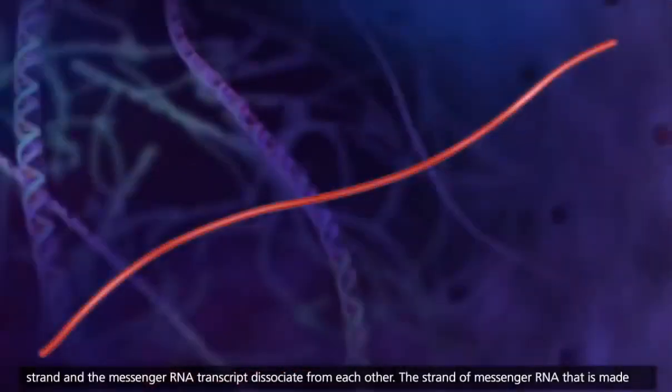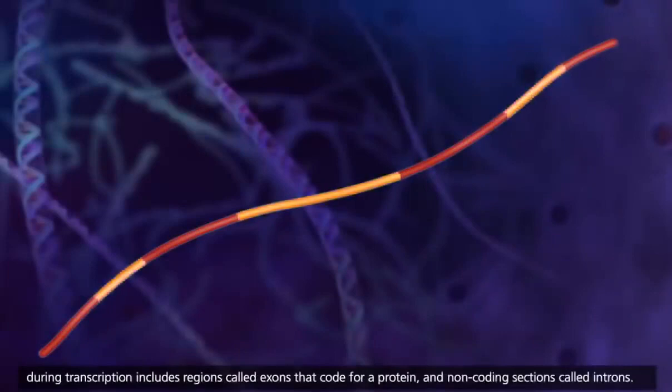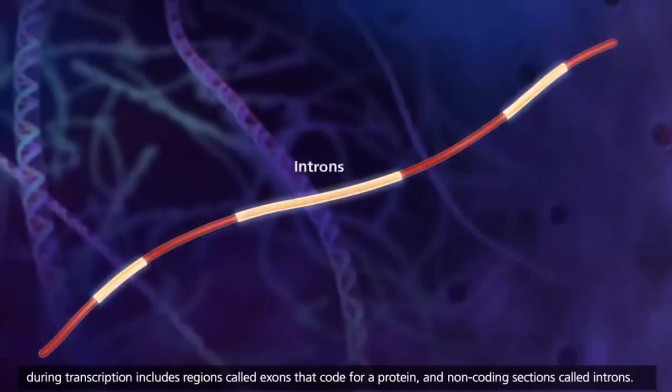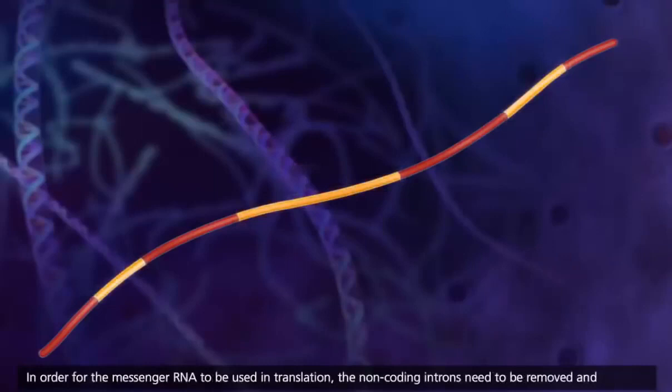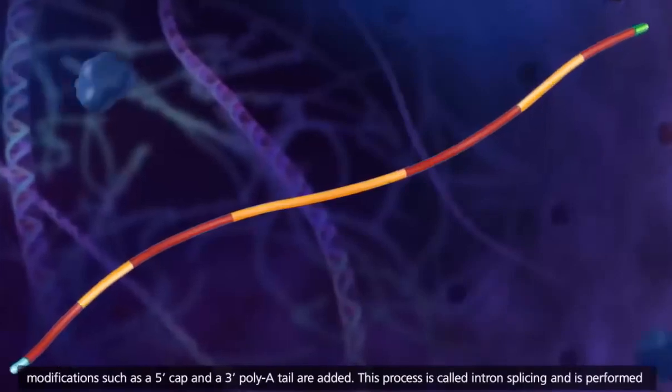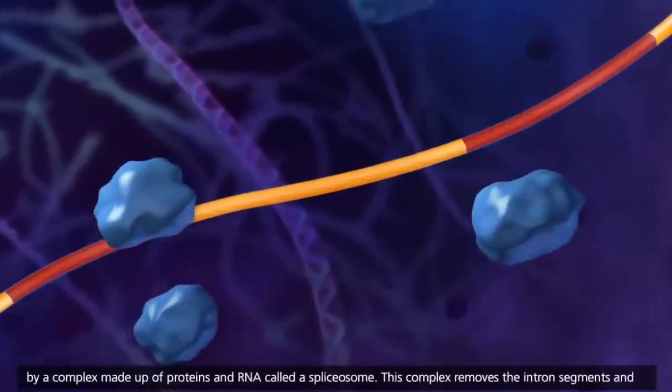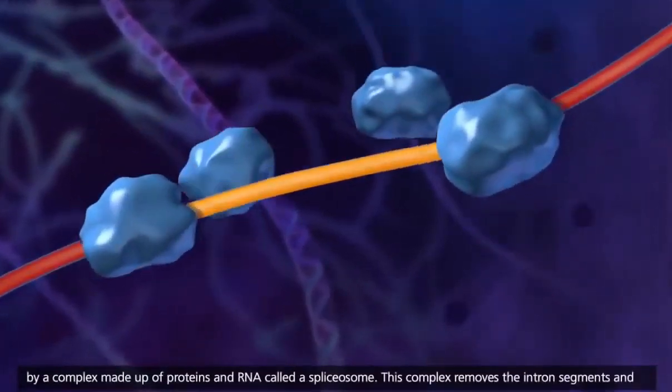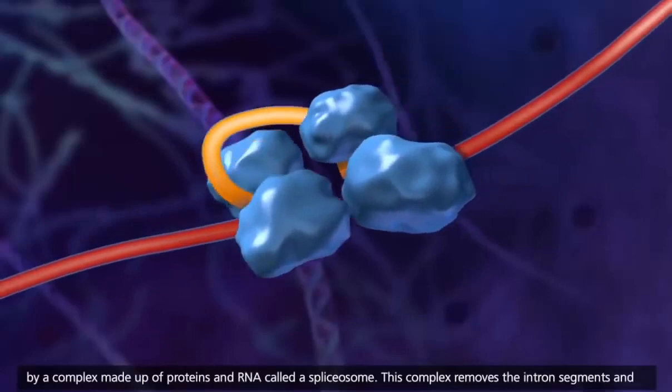The strand of messenger RNA that is made during transcription includes regions called exons that code for a protein, and non-coding sections called introns. In order for the messenger RNA to be used in translation, the non-coding introns need to be removed, and modifications such as a 5' cap and a 3' poly-A tail are added. This process is called intron splicing, and is performed by a complex made up of proteins and RNA called a spliceosome.